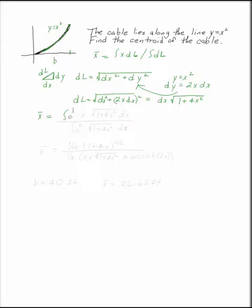This is going to be the integral from 0 to b of x times the square root of 1 plus 4x squared times dx over the integral from 0 to b of square root of 1 plus 4x squared dx.